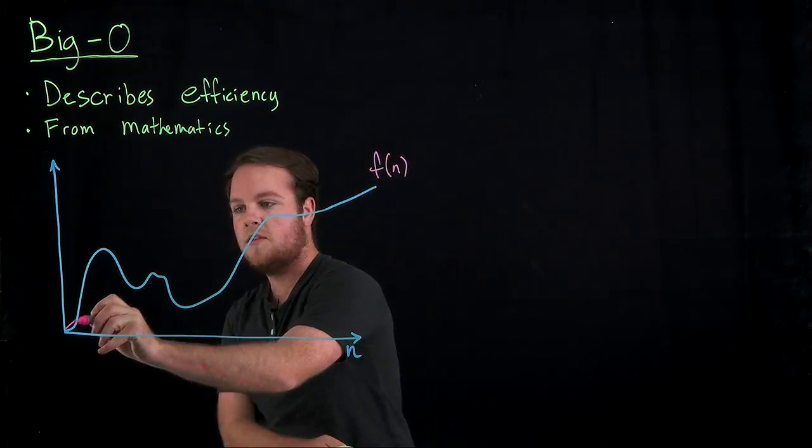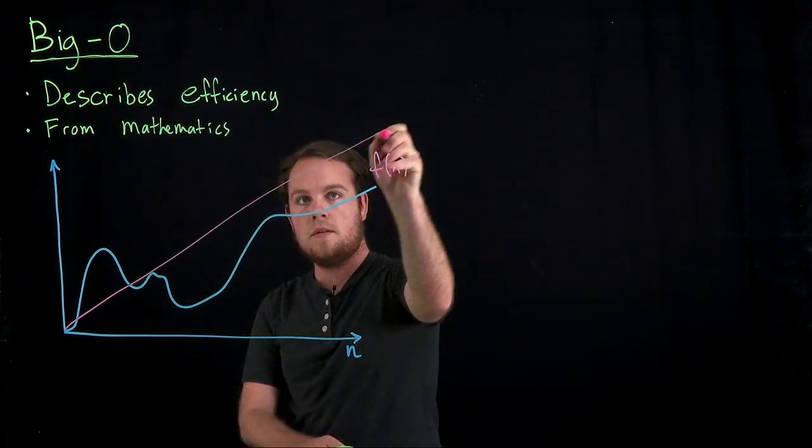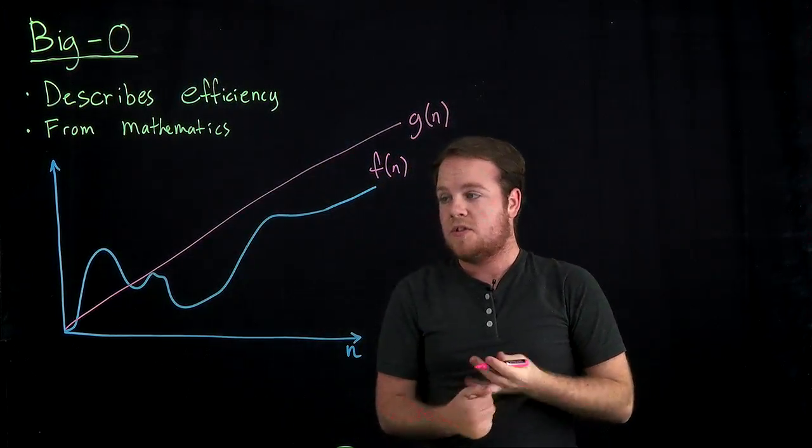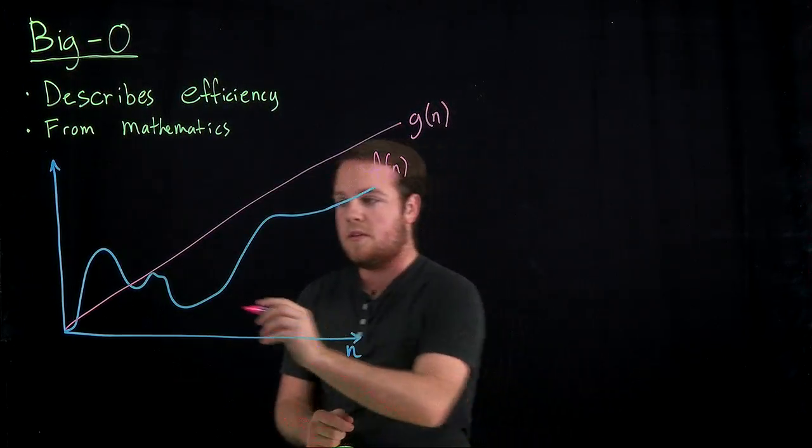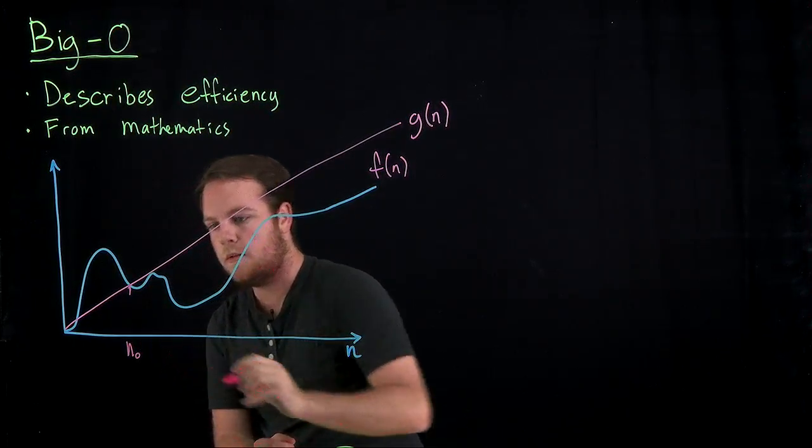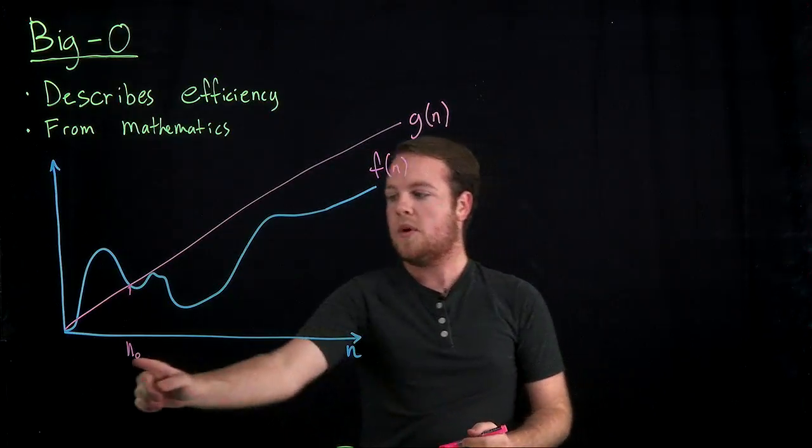So what we like to do is we like to say it's smaller than some function after some point. So let's say we pick this function, g of n, such that after some point, it doesn't matter the point, it's arbitrary. So we say after this point right here, n0, after this point,